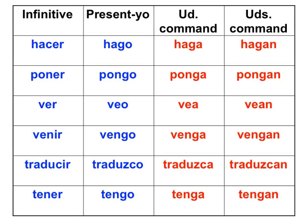To finish up our examples, we have some go-go verbs. Hacer: hago — haga usted, hagan ustedes. I'm quite certain you have seen hagan before. And then poner: pongo — ponga usted, pongan ustedes.